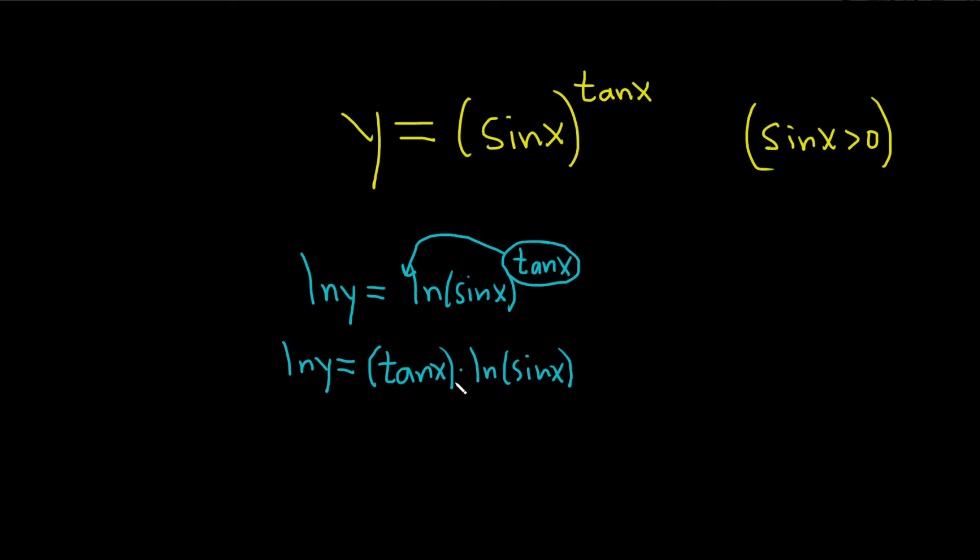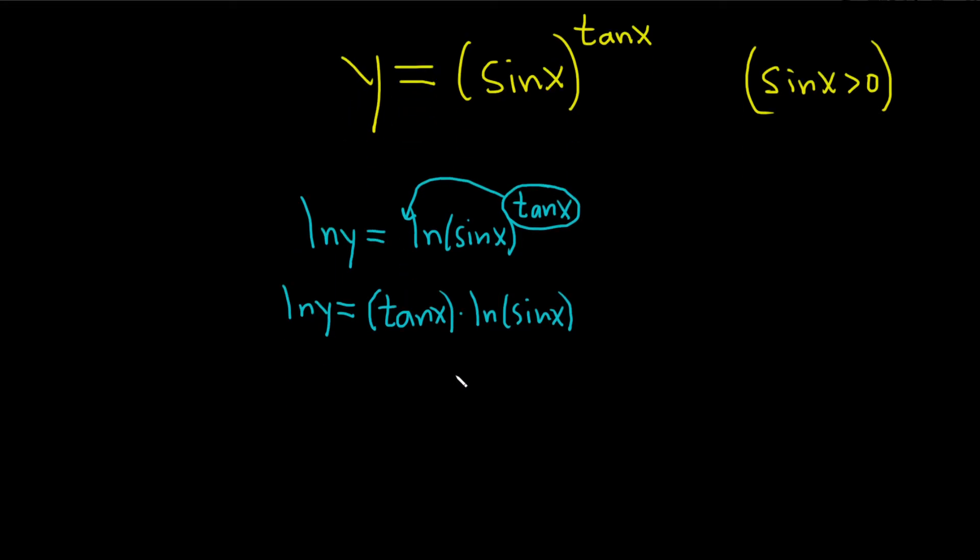Now that we've simplified, the next step is to take the derivative of both sides with respect to x. The derivative of ln x is 1 over x. Here it's the ln of y, so it's 1 over y, times the derivative of the inside function, which is just dy dx.